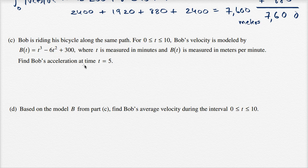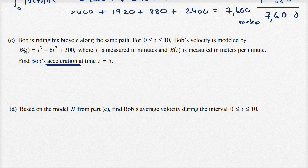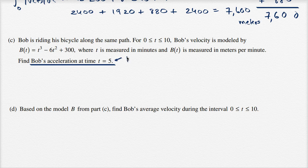Find Bob's acceleration at time t = 5. Well, acceleration — this is a velocity function right over here, so the acceleration is going to be the derivative of the velocity function with respect to time. The rate of change of velocity with respect to time is acceleration. So we really just want to evaluate b prime of 5.